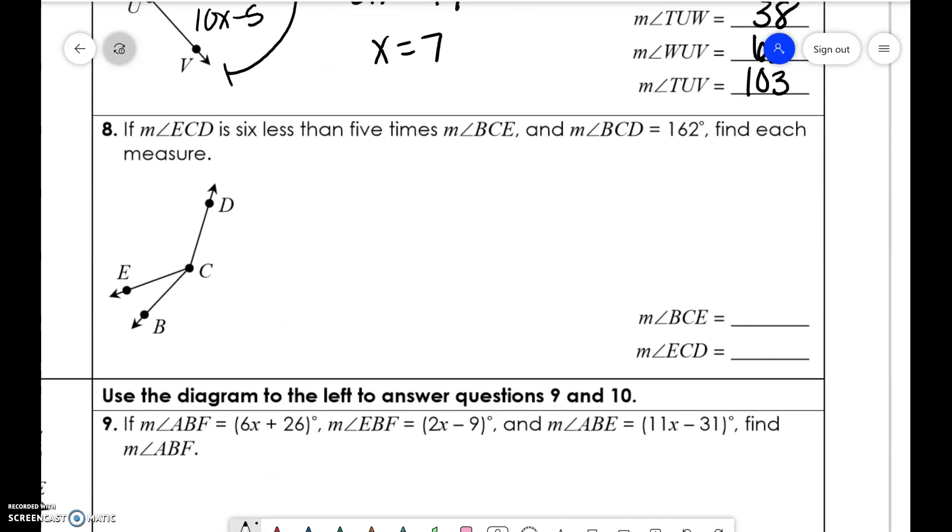Okay. Now this is where these get a little bit tricky. These have words that are dealing with them, so we have to read these. So ECD is 6 less than 5 times the measure of BEC. Okay. So let's read that again. ECD is 6 less than 5 times x.